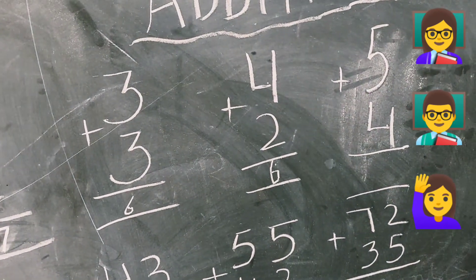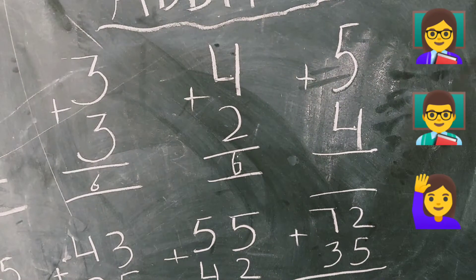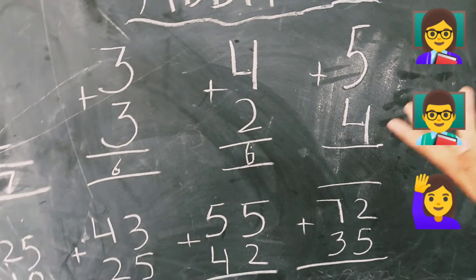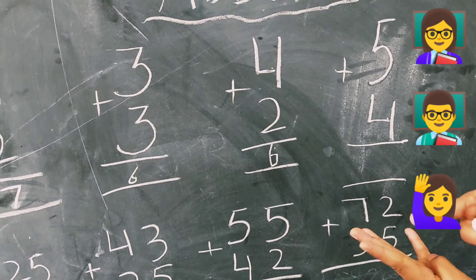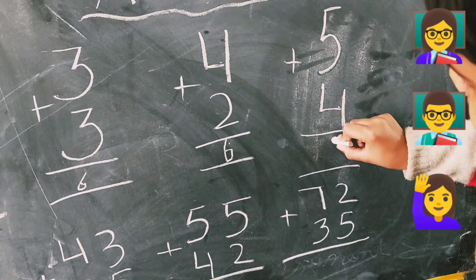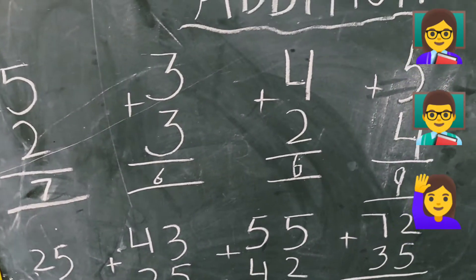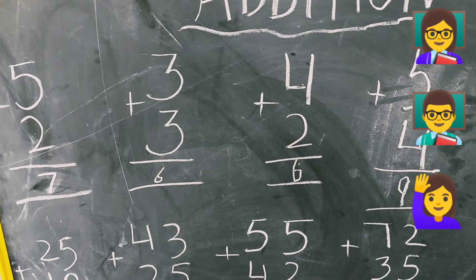Next is five plus four. So, five we keep in our mind and four on your finger. Five, six, seven, eight, nine. Yes. So, answer is nine. Very good. Yeh tha humara kiddies single digit number.